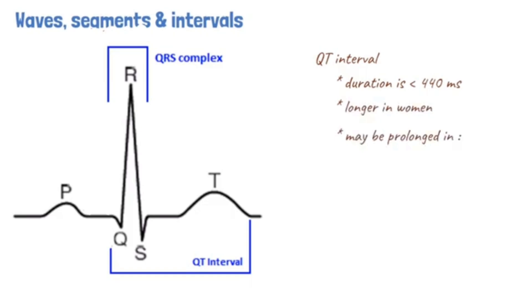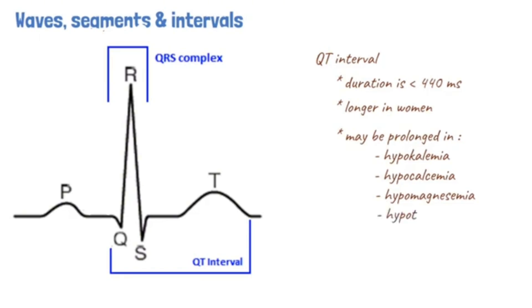There are numerous causes of prolonged QT interval, including electrolyte disturbances such as hypokalemia, hypocalcemia, and hypomagnesemia. Other causes of prolonged QT include hypothermia, congenital syndromes, and myocardial ischemia.